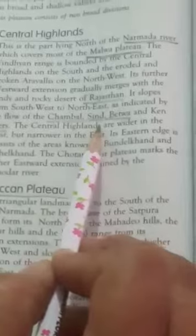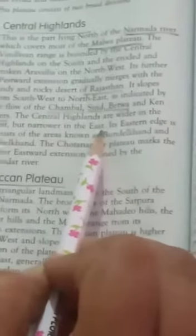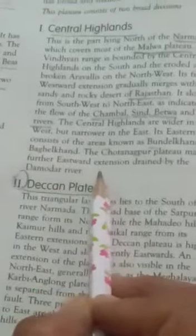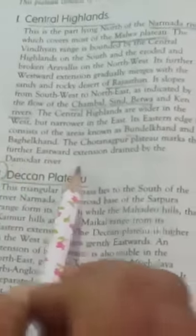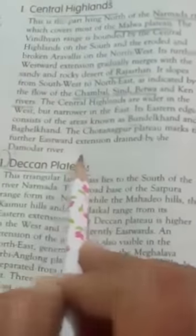The Central Highlands are wider in the west but narrower in the east. Its eastern edge consists of the areas known as Bundelkhand and Baghelkhand. The Chhota Nagpur Plateau marks the further eastward extension drained by the Damodar river.